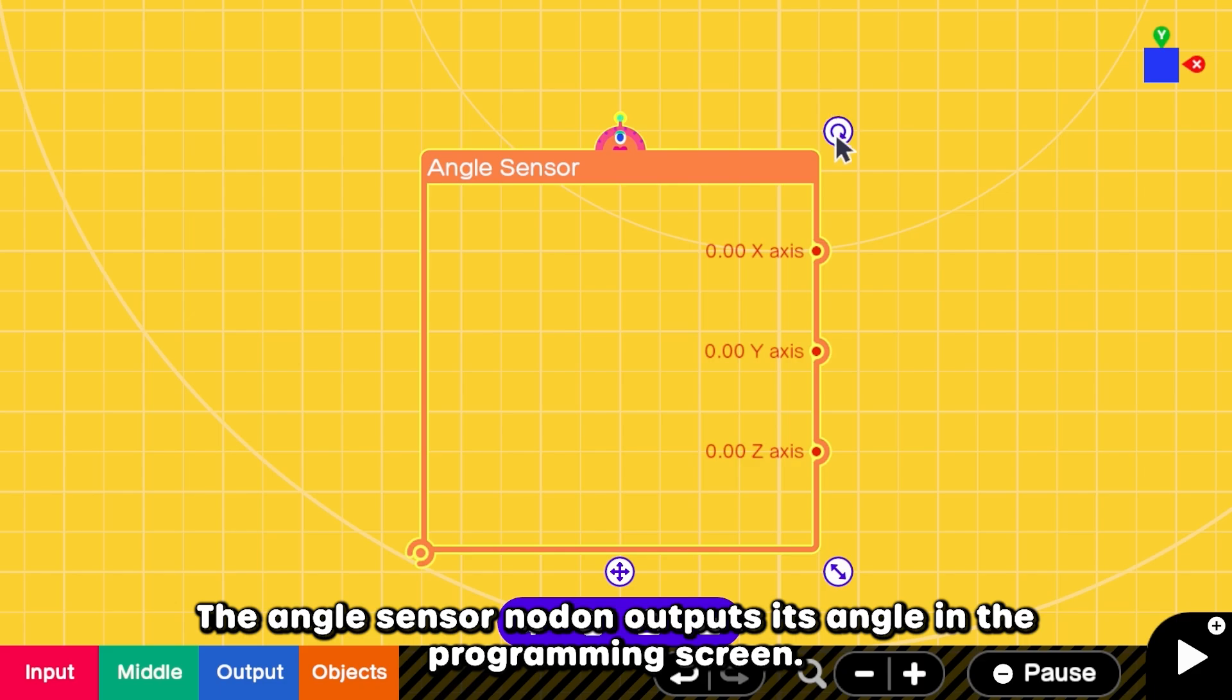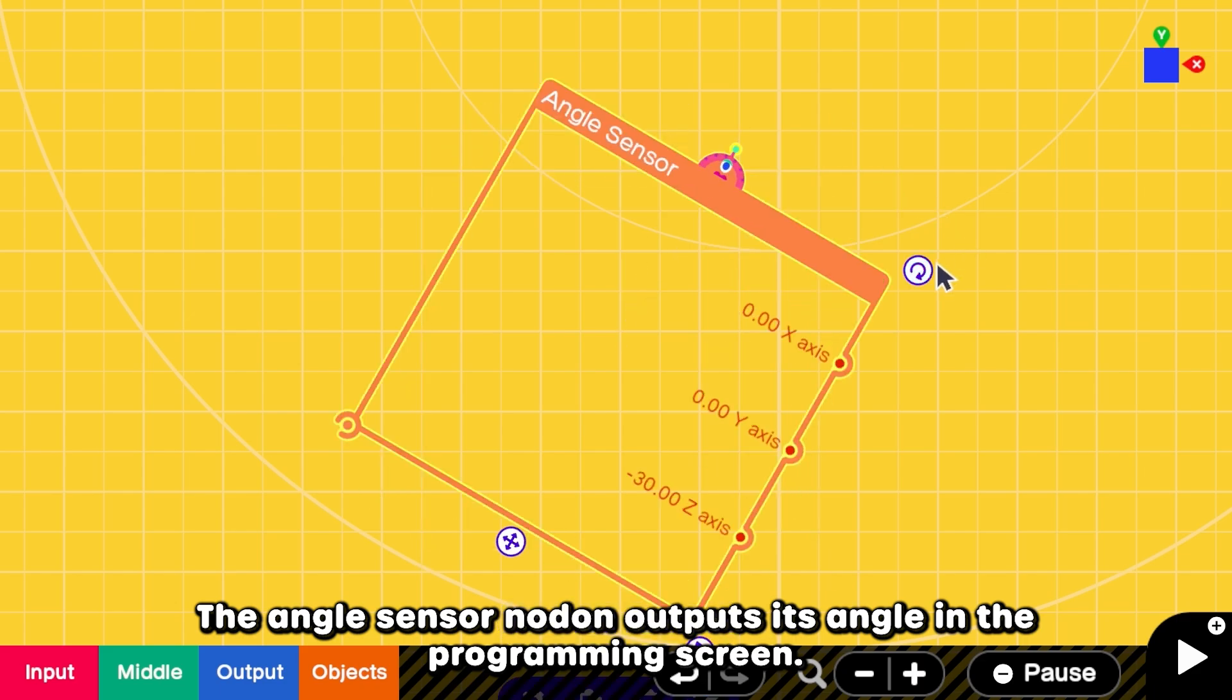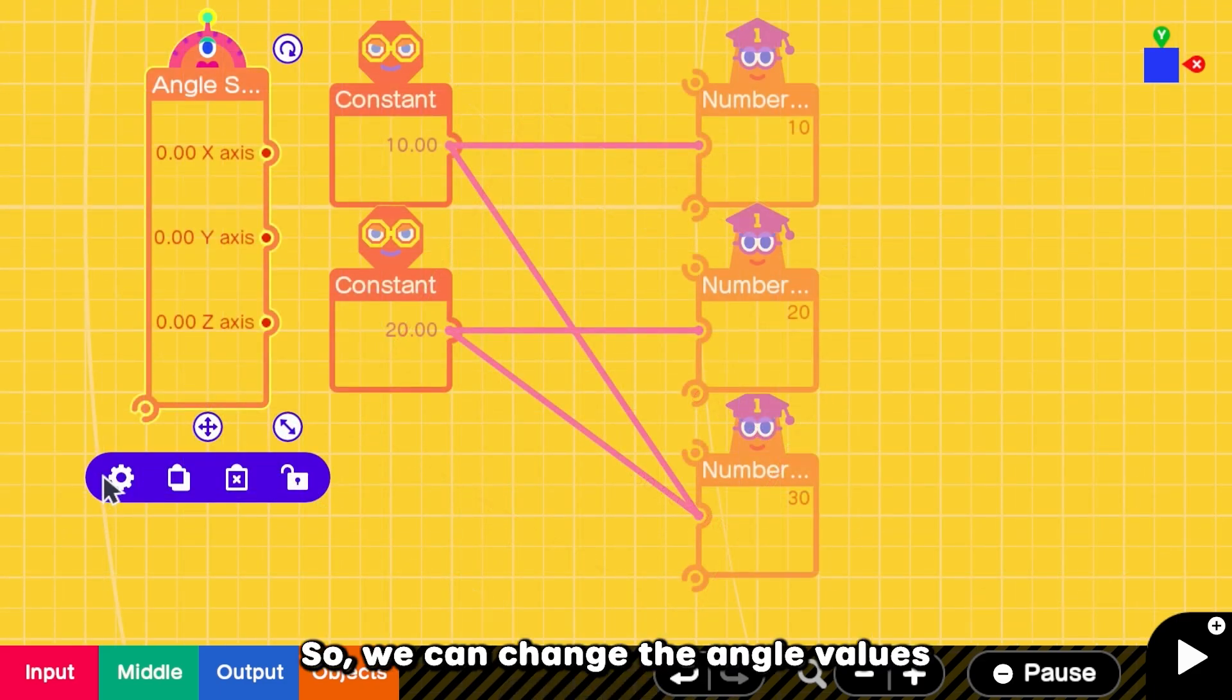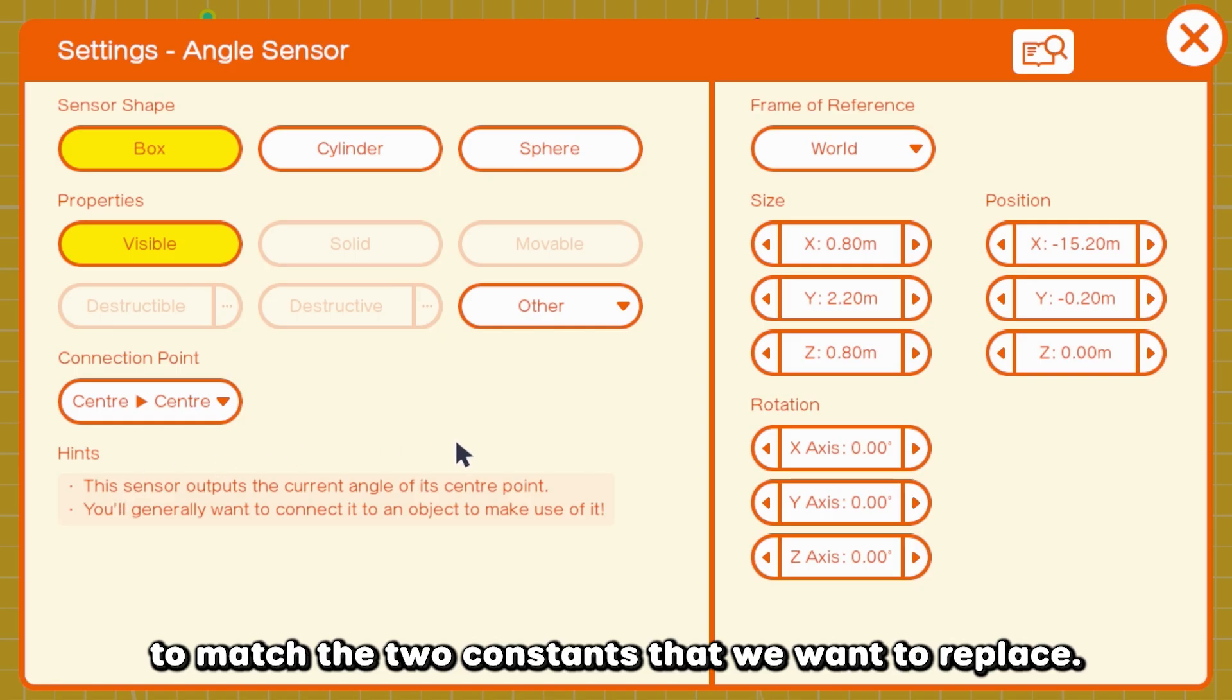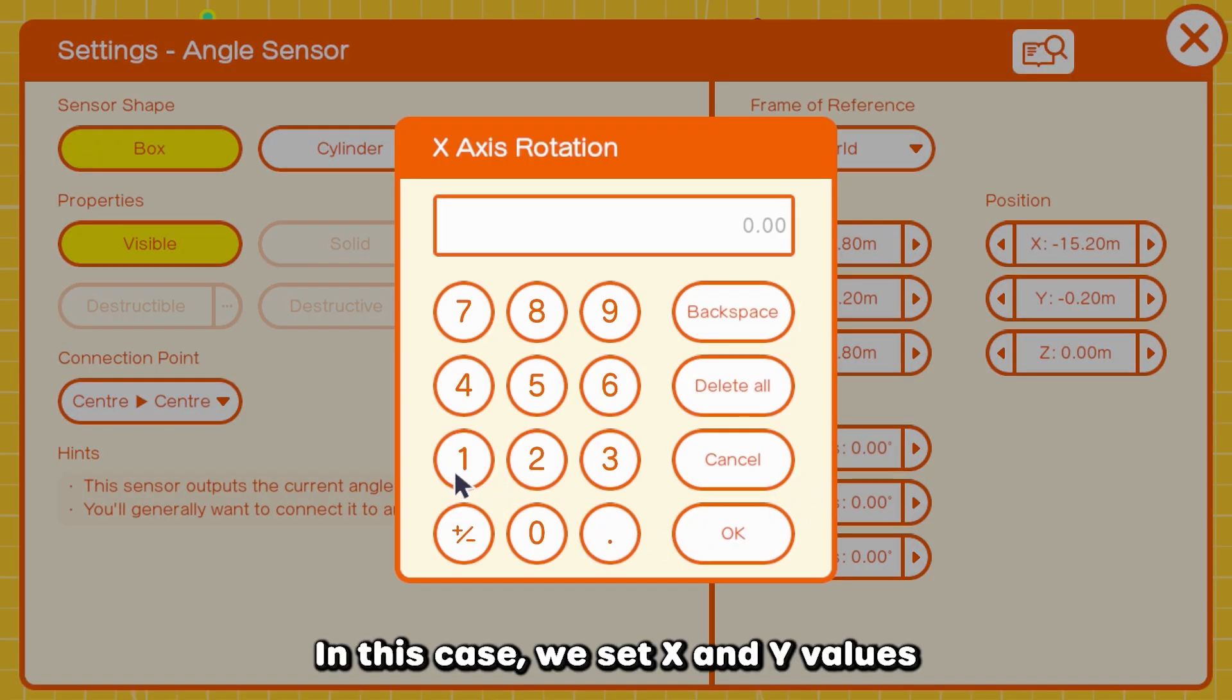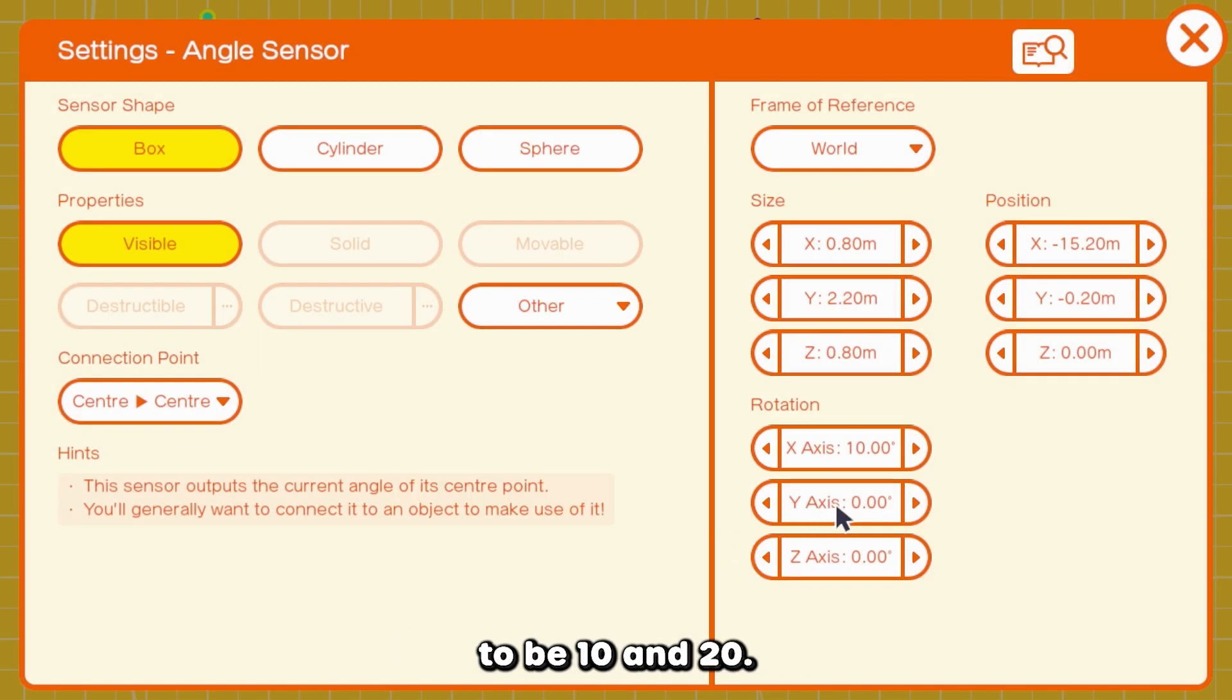The angle sensor nodon outputs its angle in the programming screen. So we can change the angle values to match the two constants that we want to replace. In this case, we set X and Y values to be 10 and 20.